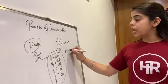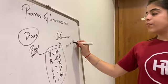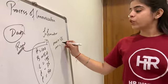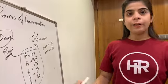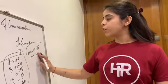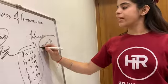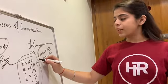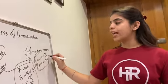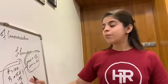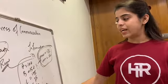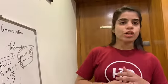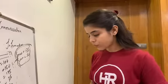When you process that data, you get information: the maximum price is 175 rupees and the minimum price is 50 rupees. So this data has been collected, processed, and analyzed to derive information. Information means the outcome received after processing the data.